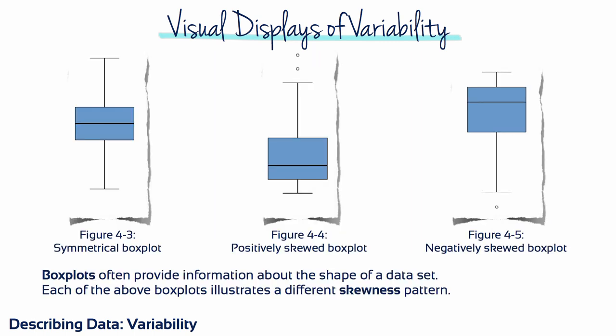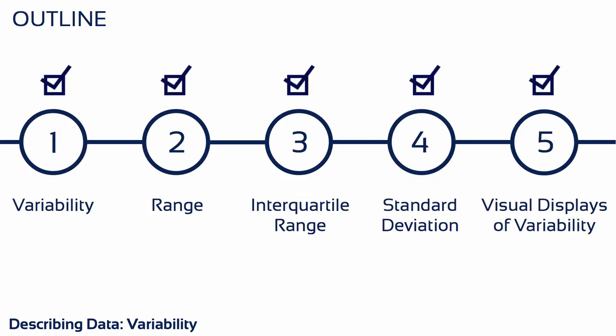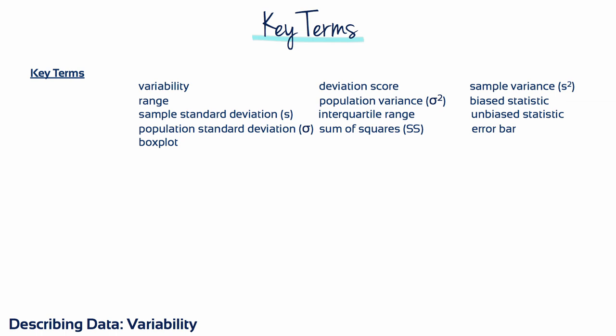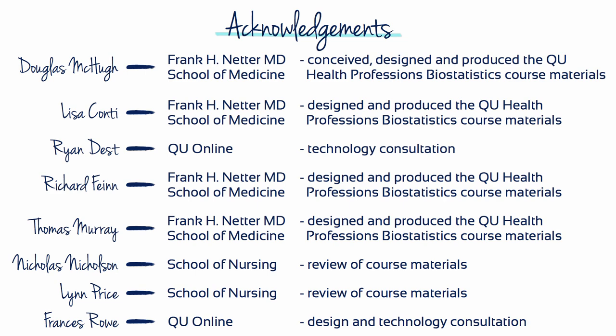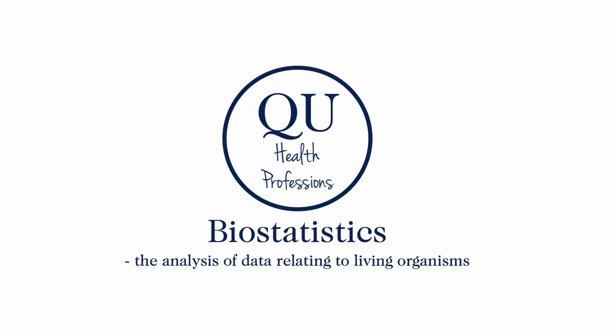Box plots often provide information about the shape of a dataset. Each box plot illustrates a different skewness pattern: figure 4-3 indicates a symmetrical box plot, figure 4-4 represents a positively skewed box plot, whereas figure 4-5 represents a negatively skewed box plot.